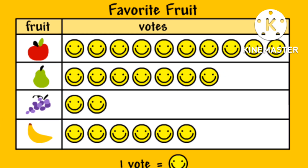Let's discuss one example. Here is a pictograph where some students of a classroom voted for their favorite fruits. One smiley is equal to one fruit. So you can say that 10 students voted for apple, seven students voted for pear, two for grapes, and six for bananas.